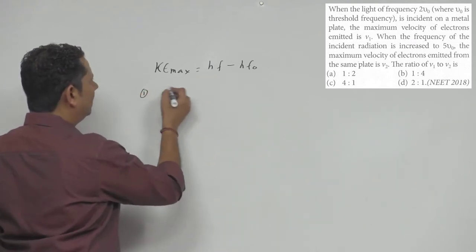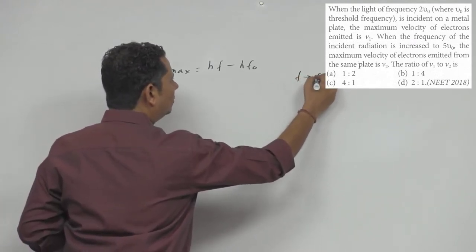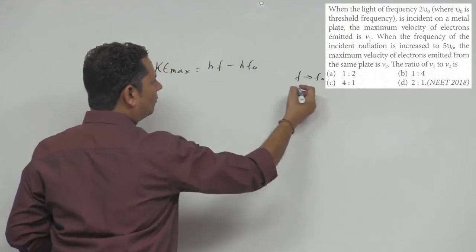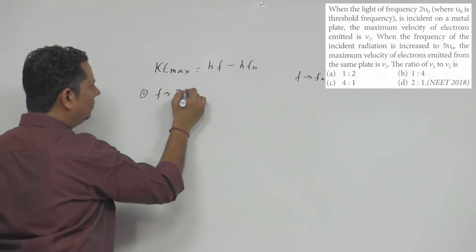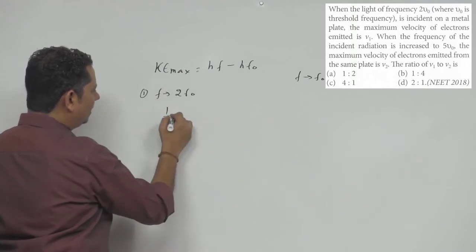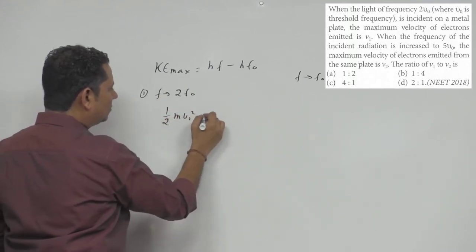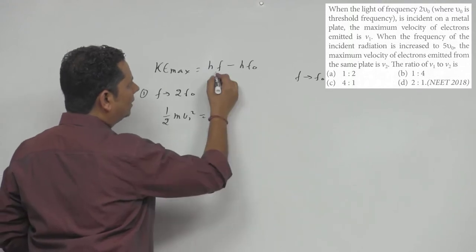So for the first case, the frequency F₀ is your initial frequency. In the first case, the frequency we used is 2F₀.